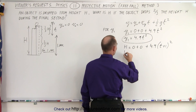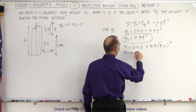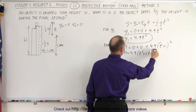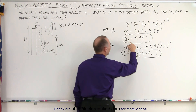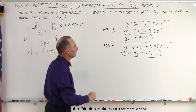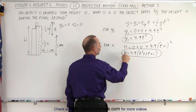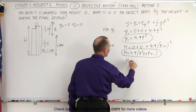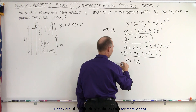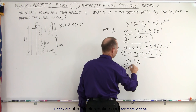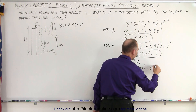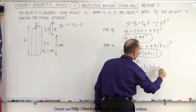Now we know that y1 is one-third of h, or equivalently h equals three times y1. Substituting our expressions: 4.9 times (t squared plus 2t plus 1) equals three times 4.9 t squared.